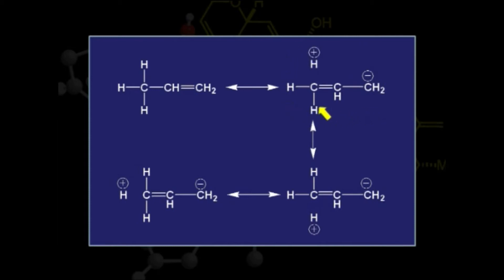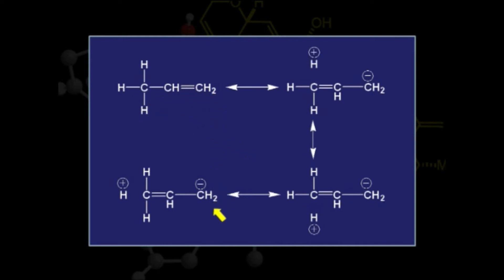Now the second carbon-hydrogen bond is interacting with the same carbon-carbon double bond, giving another resonance structure. Similarly, the third carbon-hydrogen sigma bond is interacting and giving another resonating structure. So, because of the presence of three carbon-hydrogen sigma bonds, we are getting three resonating structures, and hence the stability of the system is increased.